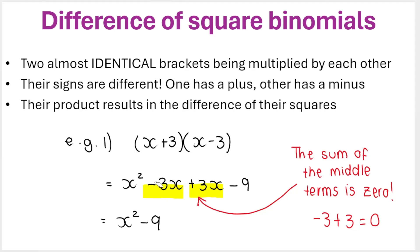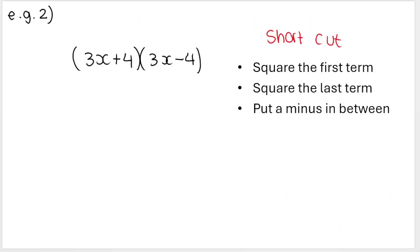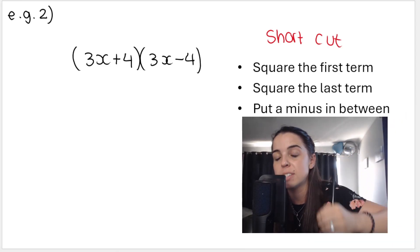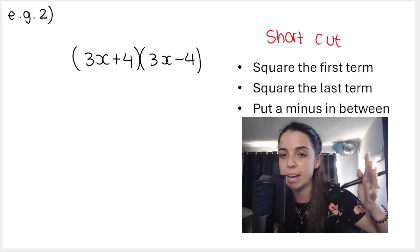Now we make use of the fact that these two middle terms disappear in this shortcut. So the shortcut method in this case is similar to the one that I taught you in the previous video. You square the first term, you square the last term, and you put a minus in between them, a minus. It's always going to be a minus because it's the difference of two squares binomial. Difference in math means minus.